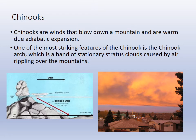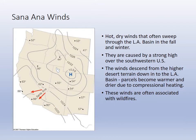Santa Ana winds are another warm, dry wind and they cause many of the wildfires you hear about in California. They are winds that come off the LA basin and a high pressure ridge that forms in the desert, and every year these very warm, dry winds are associated with wildfires.